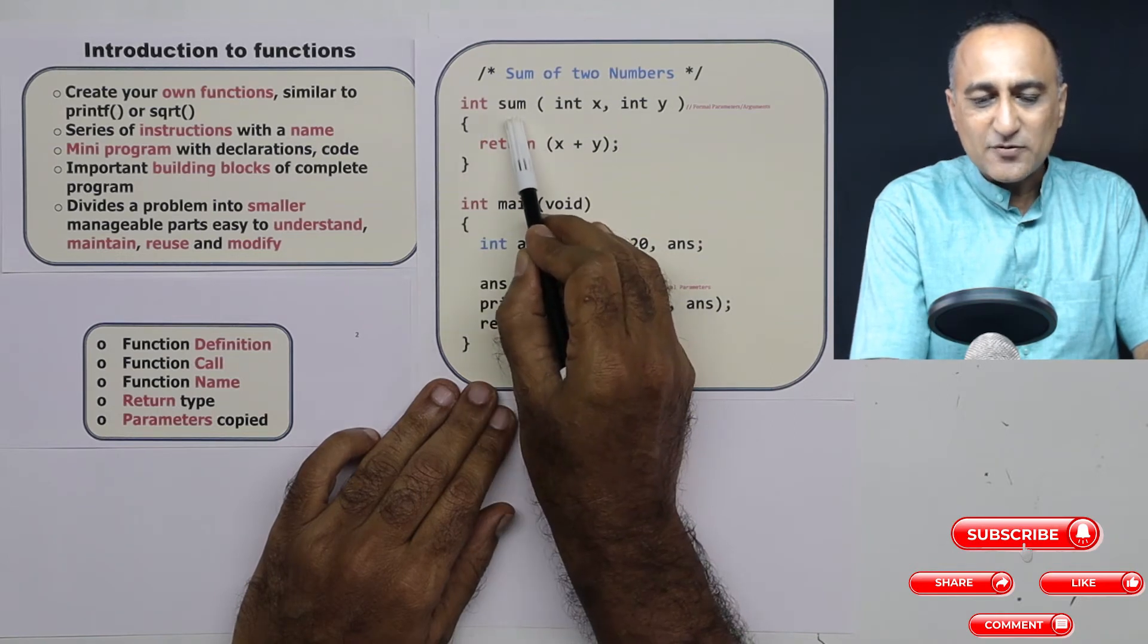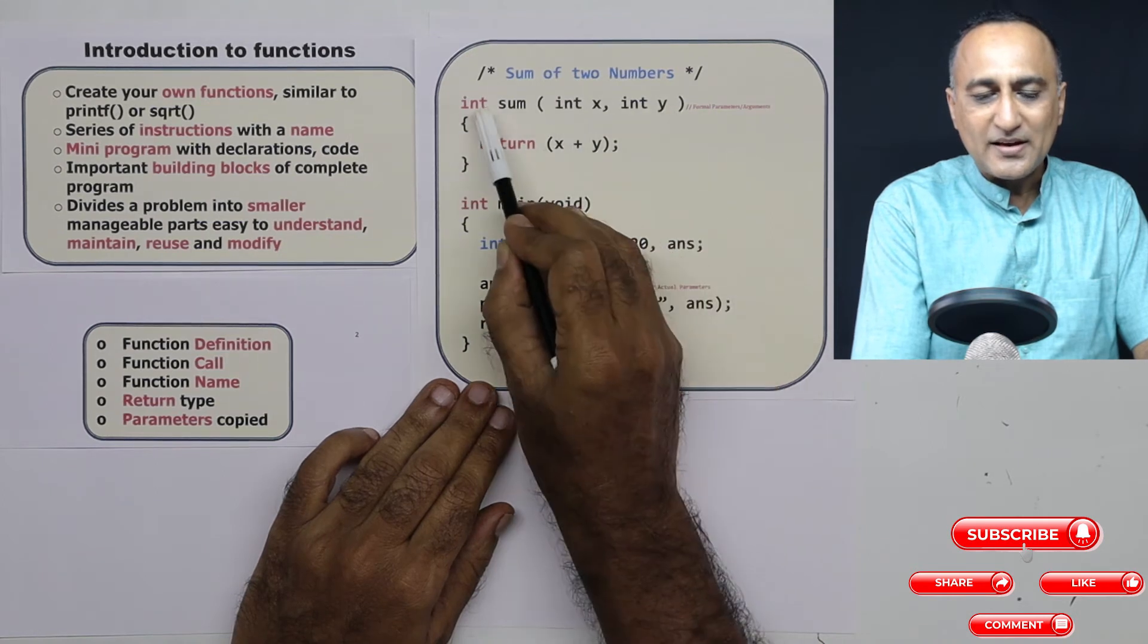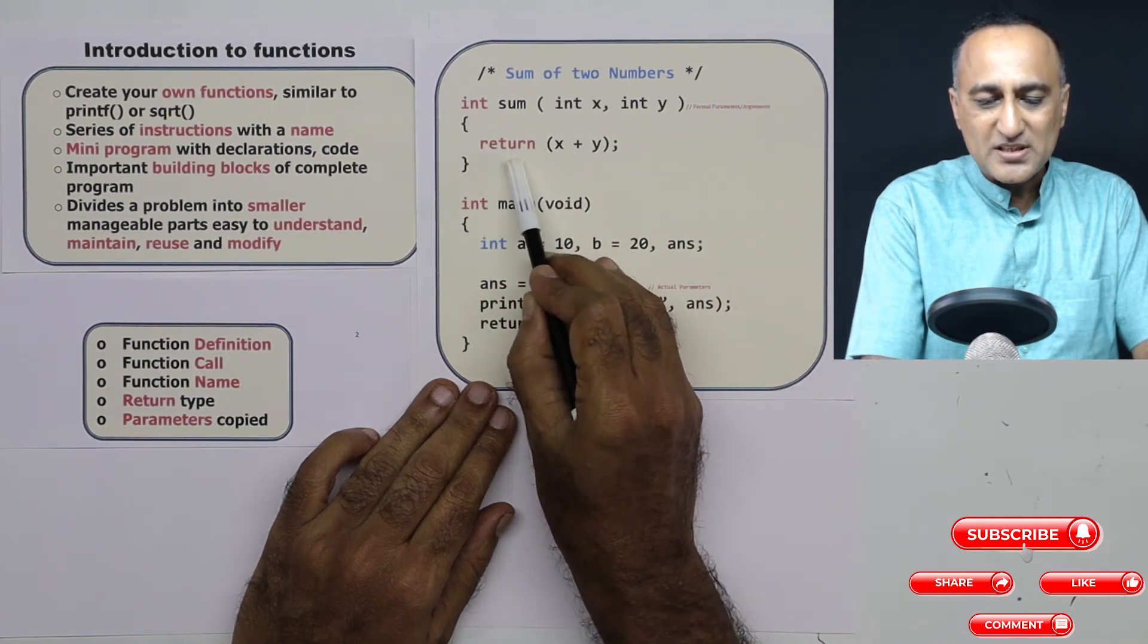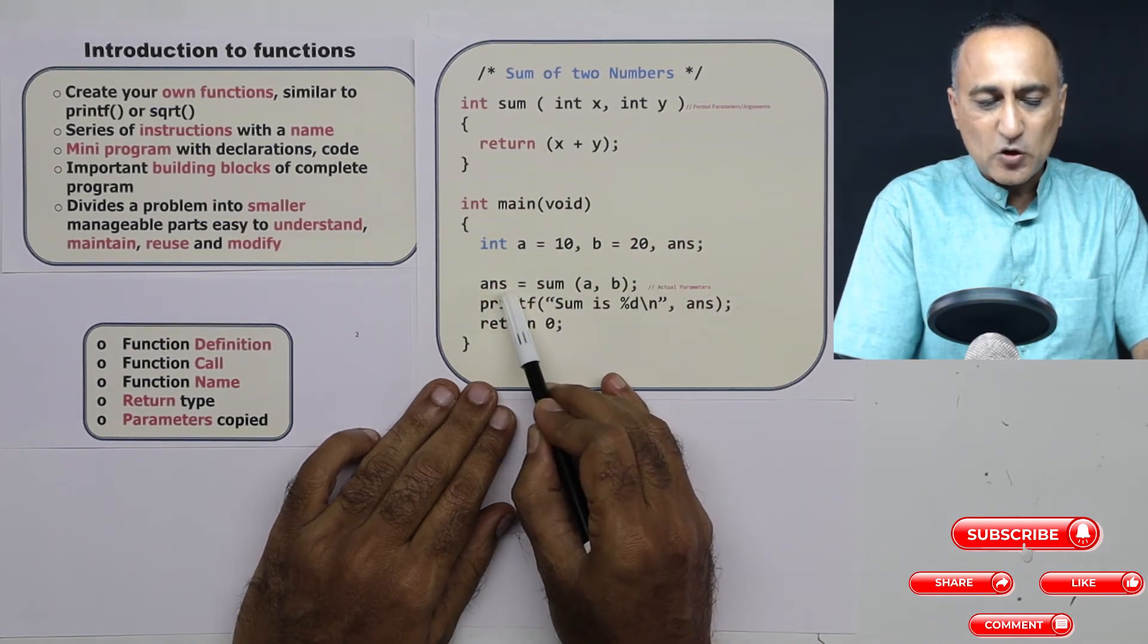Int means this function sum int x comma int y returns an integer value through this return statement which is copied to answer.